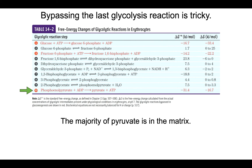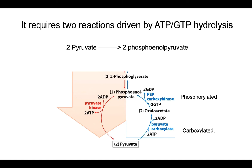The tricky part is bypassing pyruvate kinase, and it's tricky for a couple of reasons. The first is that the majority of pyruvate in the cell lies within the mitochondrial matrix. So when we are getting the two pyruvates necessary to make a molecule of glucose, we've got to start in the mitochondrial matrix. The other problem is that converting two pyruvates into two phosphoenolpyruvates is a very endergonic reaction, requiring a bunch of high-energy molecules.